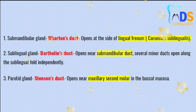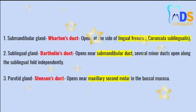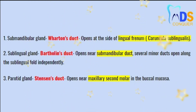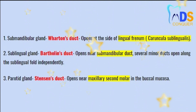Several minor ducts open along the sublingual fold independently. Point 3: the parotid gland contains Stensen's duct, which opens near the maxillary second molar in the buccal mucosa.